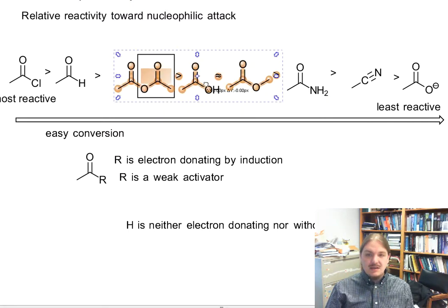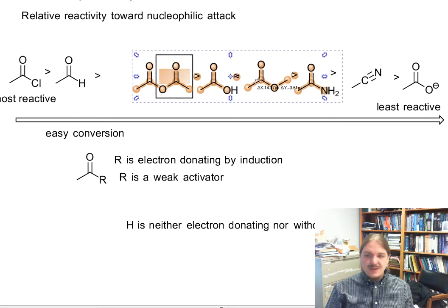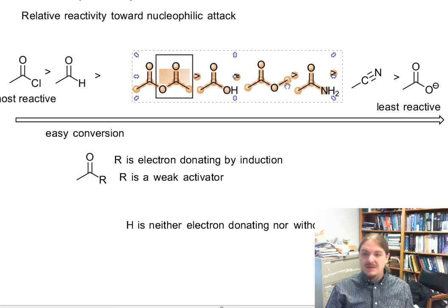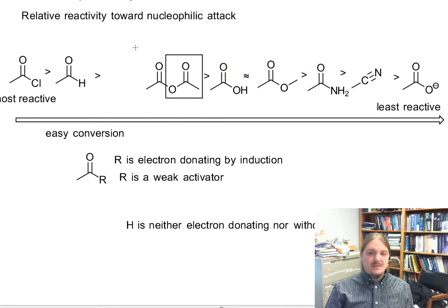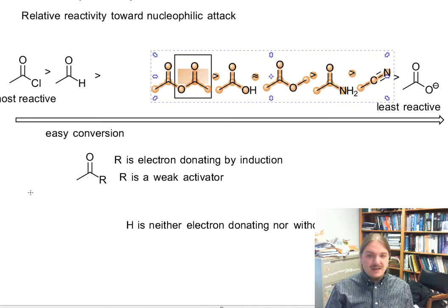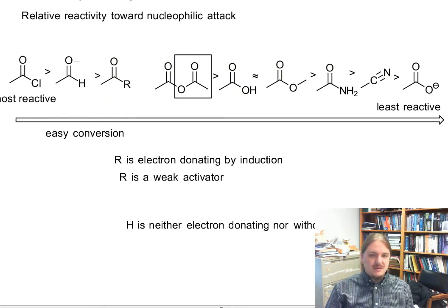The ester group in the anhydride is actually a moderate activator. So the anhydride should be a little bit less reactive than the ketone. So here comes the ketone.